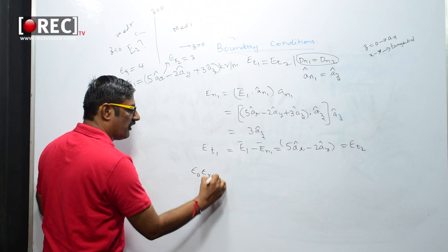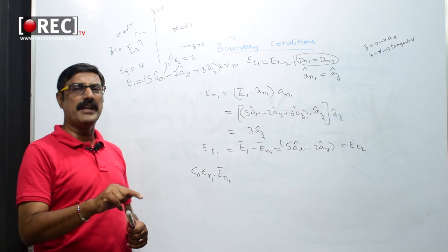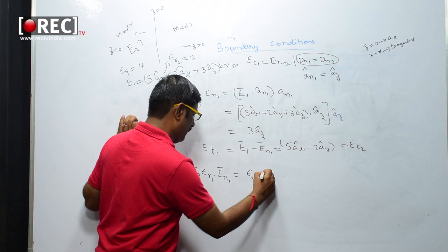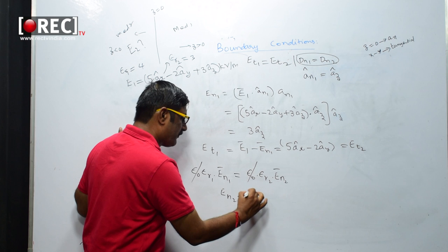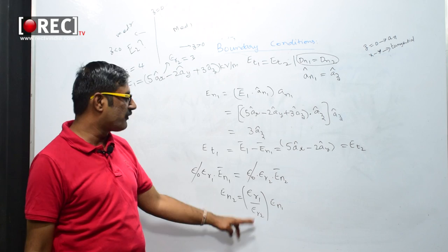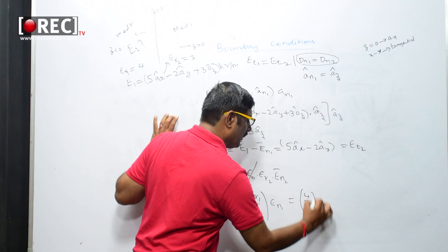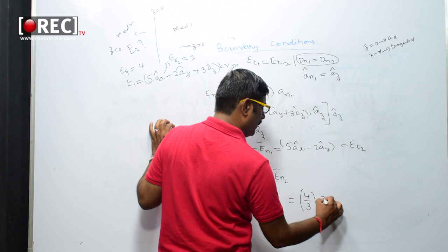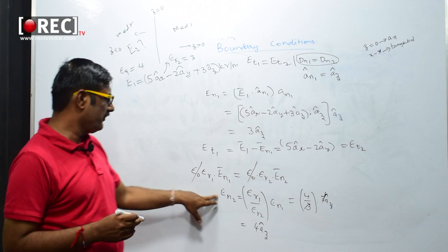Substituting D = ε₀εr·E, we get ε₀·εr1·En1 = ε₀·εr2·En2. Cancelling ε₀, this gives En2 = (εr1 / εr2) × En1 = (4/3) × 3az. The 3 cancels, giving En2 = 4az.